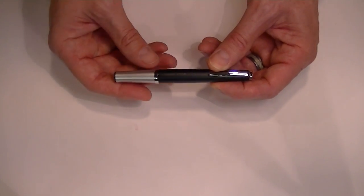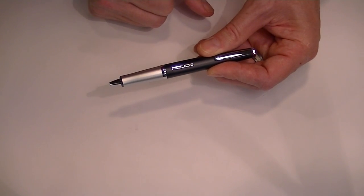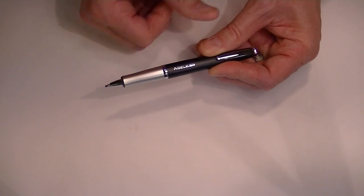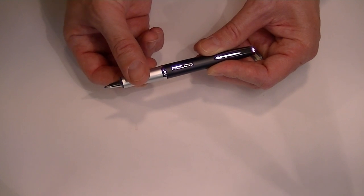The Ageless Pen is really unique because you can twist the bottom section of the pen and it extends another section. Twist it one more time and it extends the actual refill. That protects the pen.